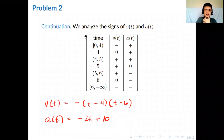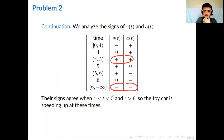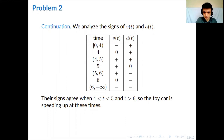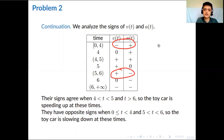Looking at the sign table, where v(t) and a(t) have the same sign — between t equals 4 and 5, and for t greater than 6 — the car is speeding up. Where they have opposite signs — between 0 and 4, and between 5 and 6 — the car is slowing down. That concludes our problem. We'll be discussing more examples and more concepts in the next video.